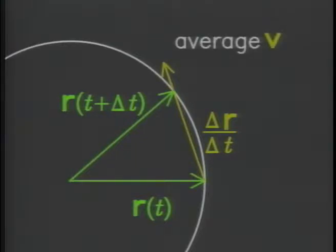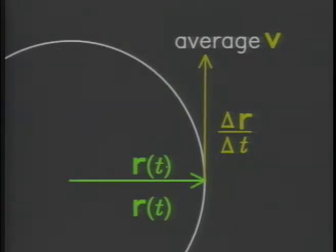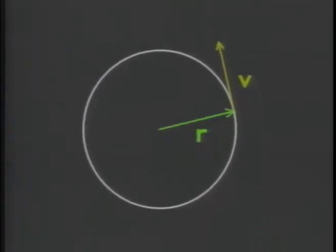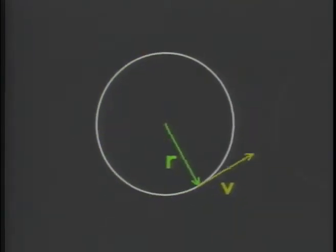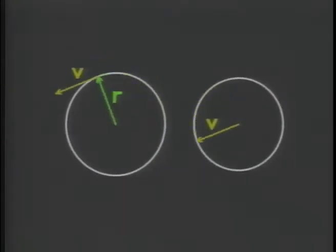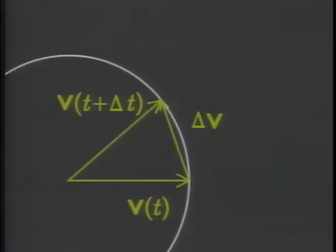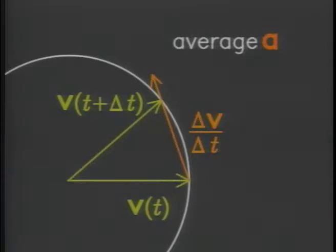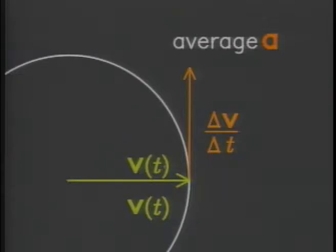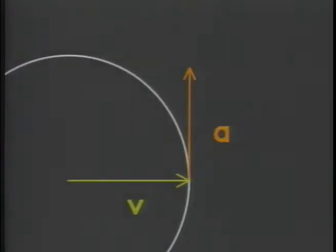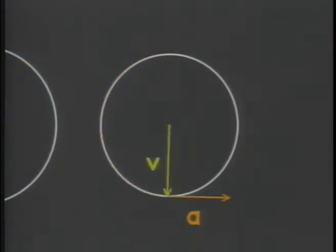The vector V, although it's always perpendicular to R, is itself undergoing uniform circular motion. Its rate of change is the acceleration. That solves the puzzle of constant acceleration at constant speed.